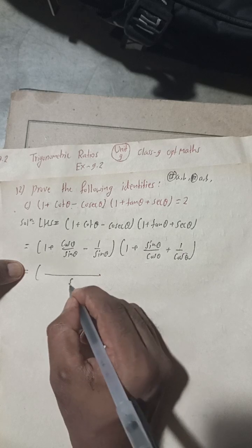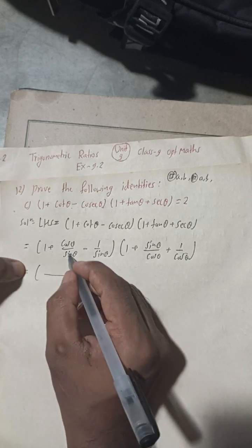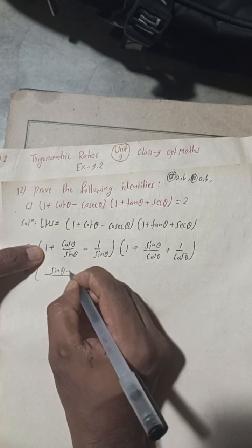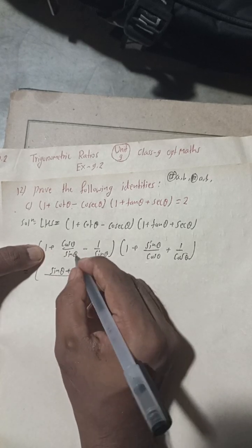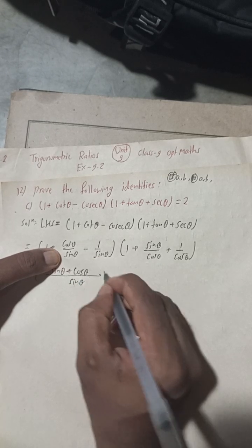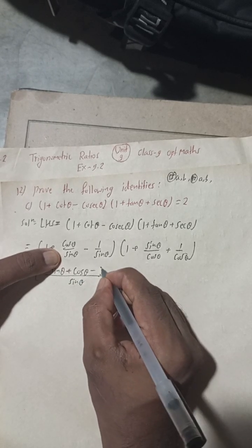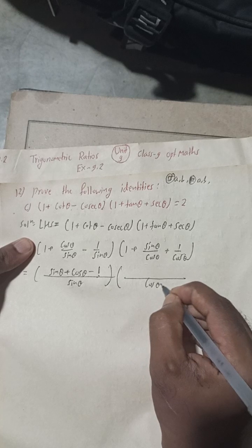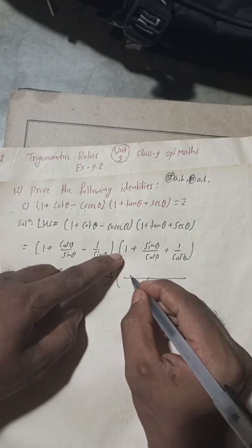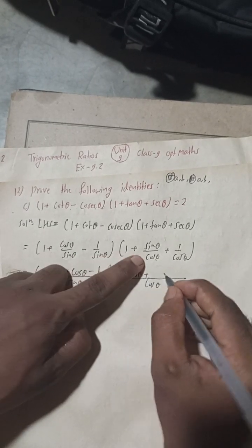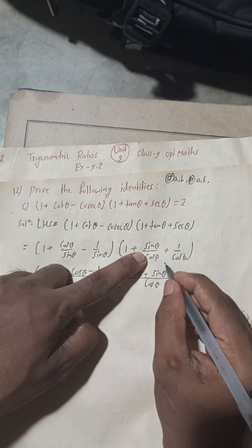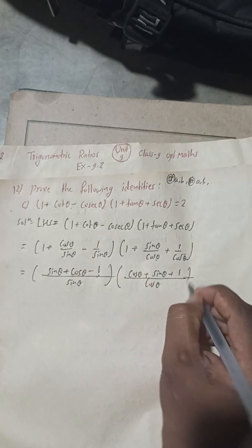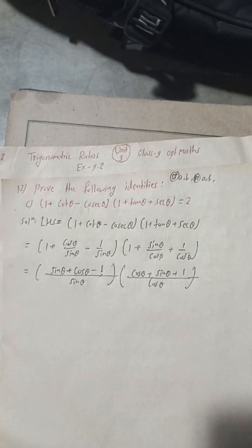In the first bracket, take sin θ as the LCM: 1 becomes sin θ, plus cos θ, minus 1 — all over sin θ. In the second bracket, take cos θ as the LCM: cos θ plus sin θ plus 1 — all over cos θ.